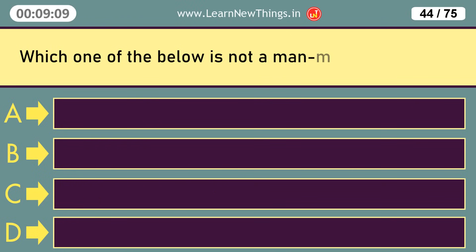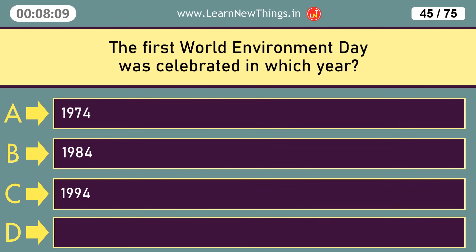Which one of the below is not a man-made ecosystem? Pond. The first World Environment Day was celebrated in which year? 1974.